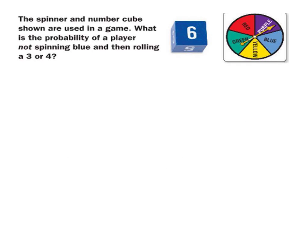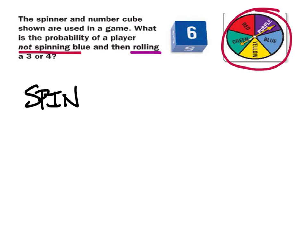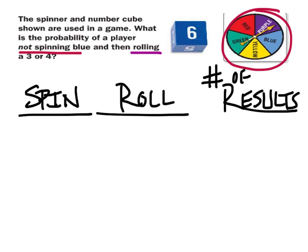Let's look at this next example. We need the spinner and the number cube — we're going to spin and then roll. Let's figure out how many outcomes there are when we want to not spin blue. Looking at the spinner, there are four sections that are not blue, so there are four possible spinner outcomes that are not blue. What about rolling a three or a four on the number cube? There's one three and one four, giving us two possible outcomes from the roll.